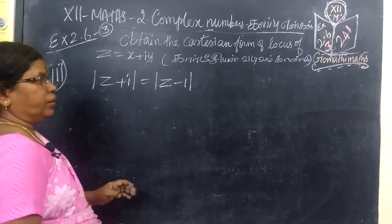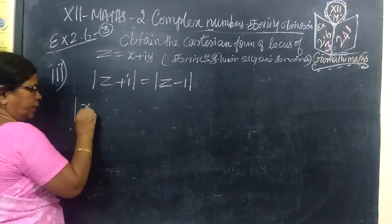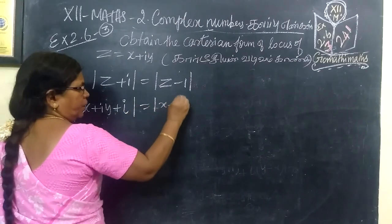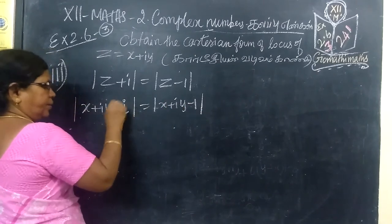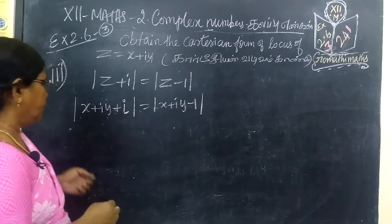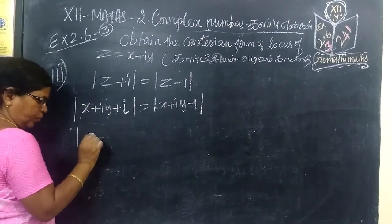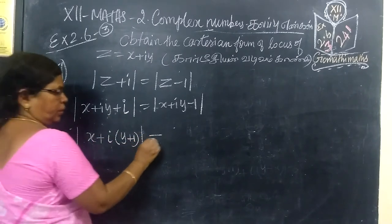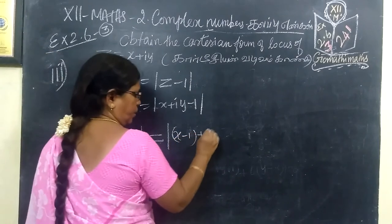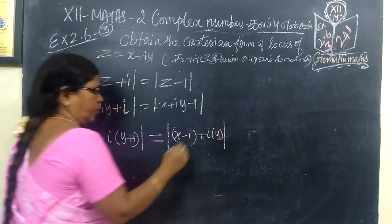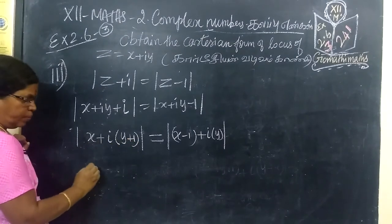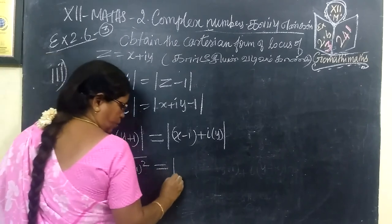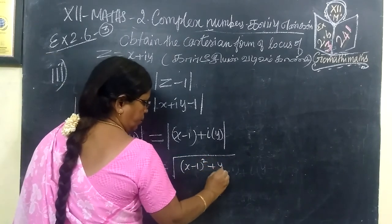Now what is the need? We want to write the Cartesian equation. So X plus Y plus I, I var 1 var capital, X plus Y minus 1. Example 2. So now write real part. Real part is X. Imaginary part is Y. Equal to X minus 1 plus I, imaginary part Y. So equal to, you are collecting the same. The root of real part squared plus imaginary part squared equal to root of real part squared plus imaginary part squared.